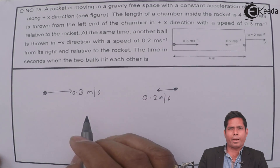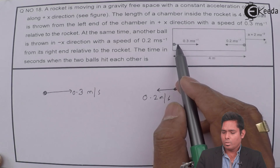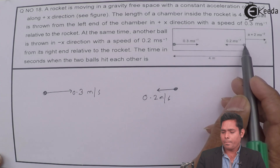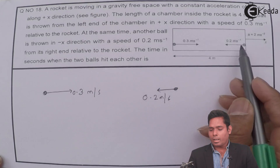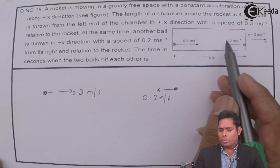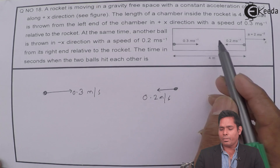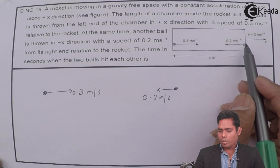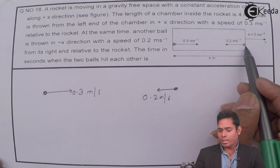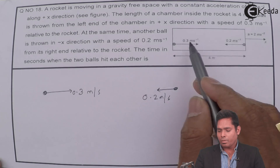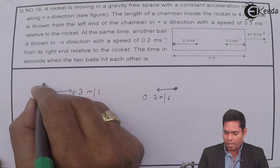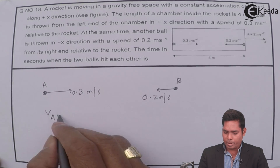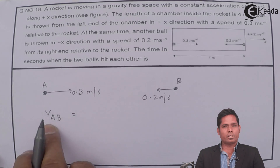If I find the relative velocity — because both balls are in the same accelerating frame — then if I fix ball B at rest, I find the velocity of A with respect to B. So the relative velocity of A with respect to B is the speed with which A approaches B when B is fixed.